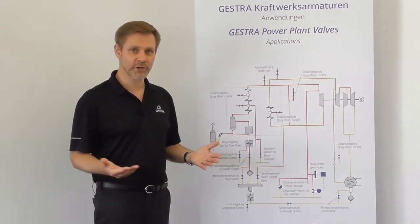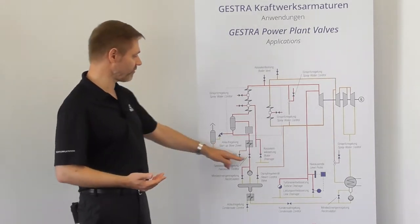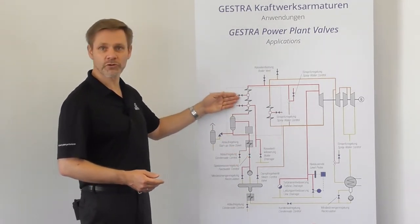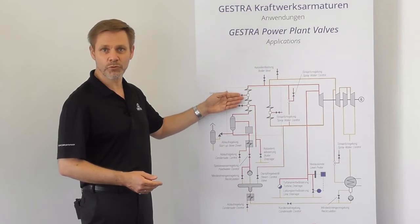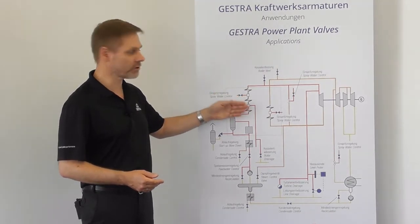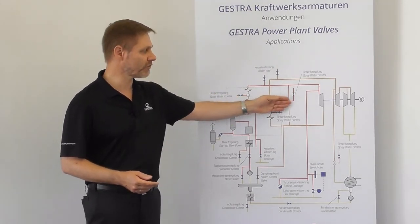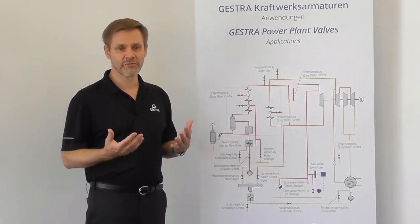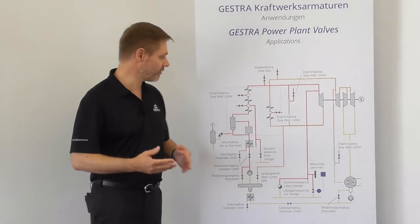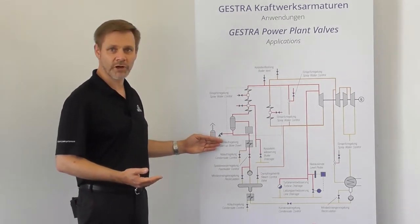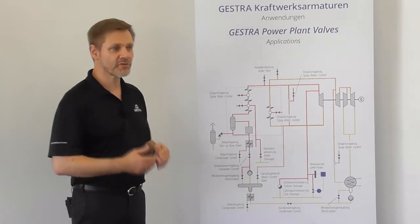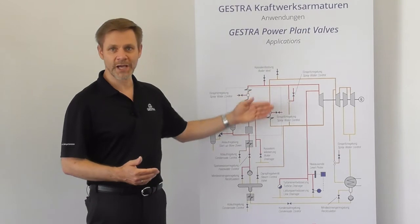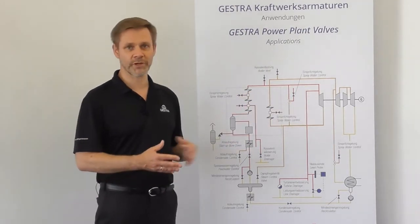An example for water applications are, for instance, the feed water control valve or the spray water control valves at the steam coolers between the super heaters or reheaters or at the bypass stations. An application for severe service at flashing water are, for instance, the start-up blowdown valves of the boiler drum, then all drain and warm-up valves for the boiler, for the piping system or for the turbine plant.